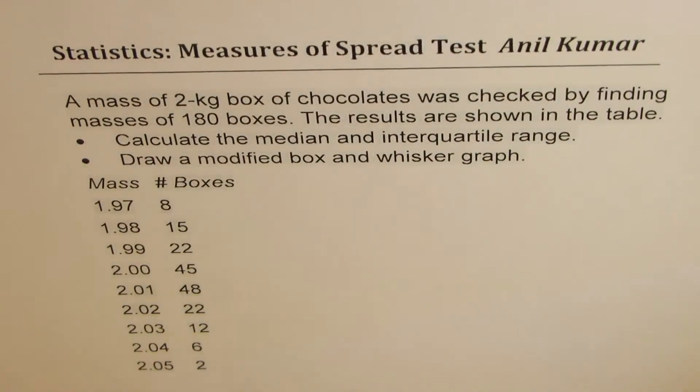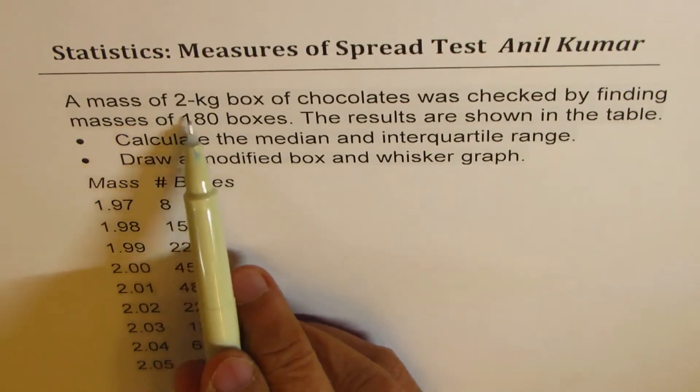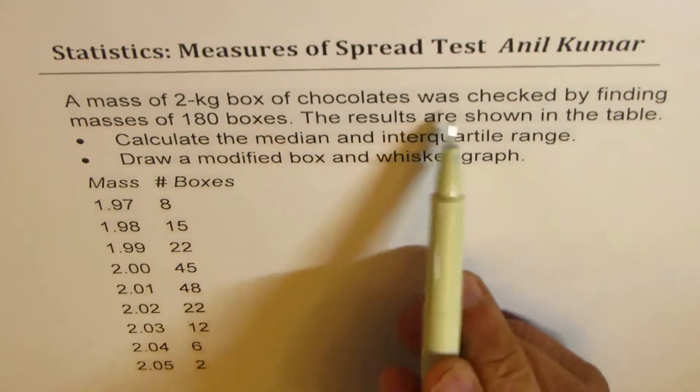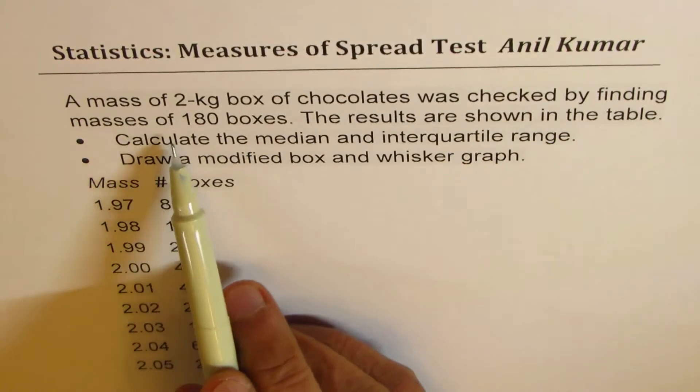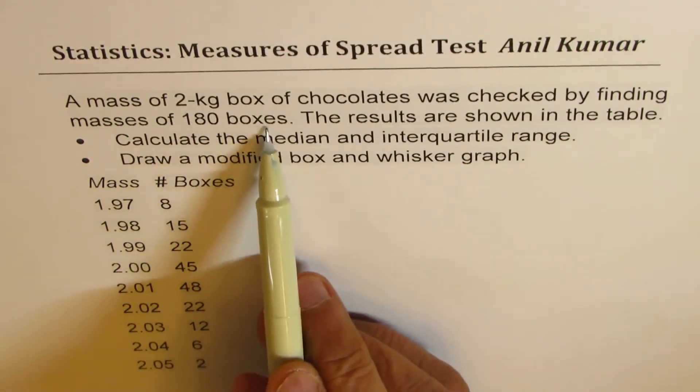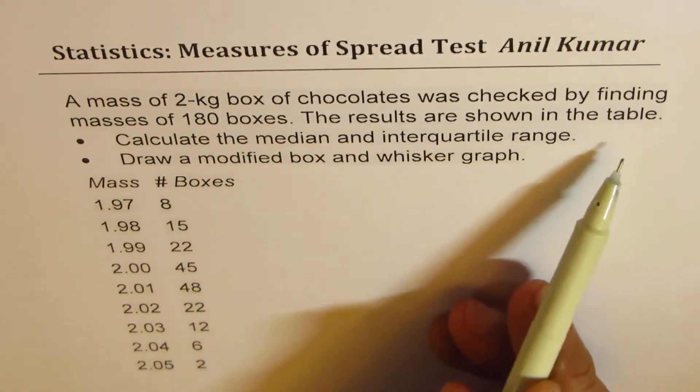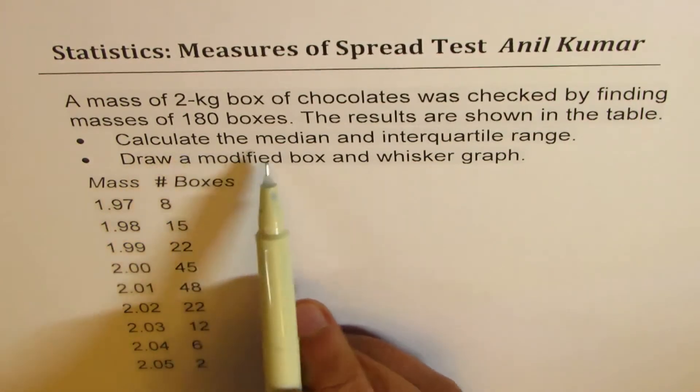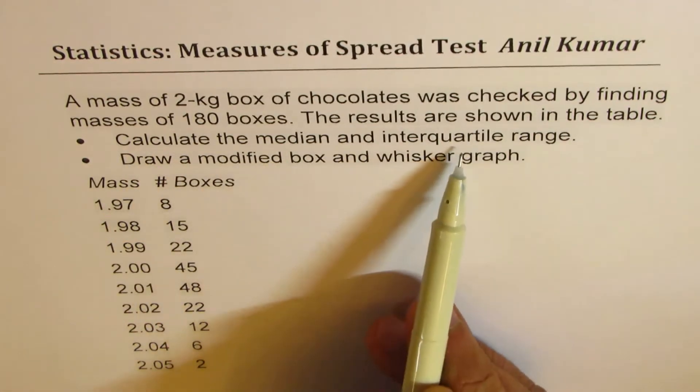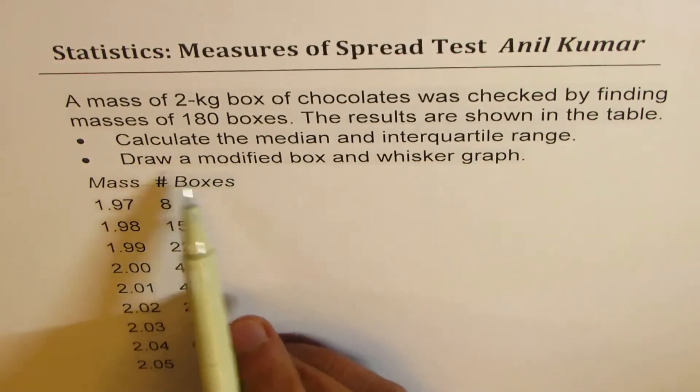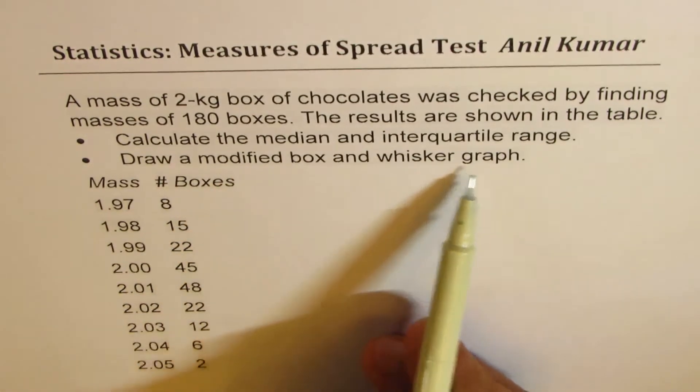The question here is: a mass of 2 kg box of chocolates was checked by finding masses of 180 boxes. The results are shown in the table. Calculate the median and interquartile range. Draw a modified box and whisker graph.